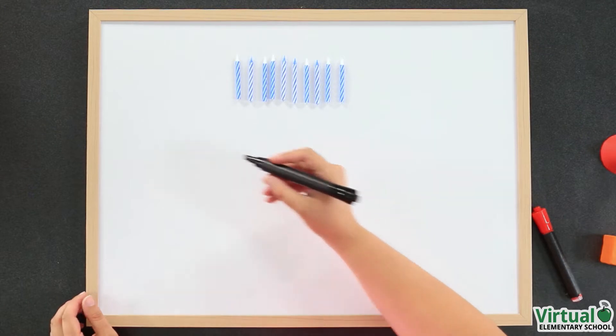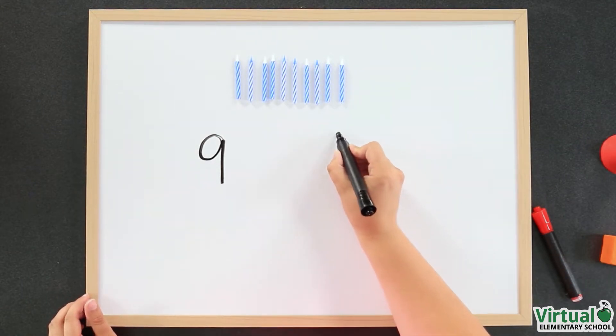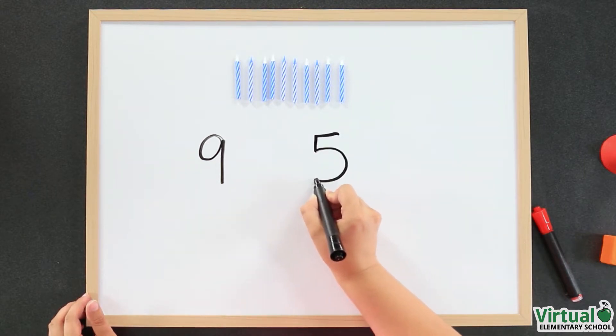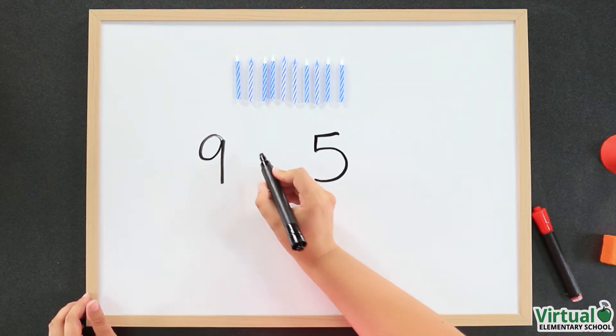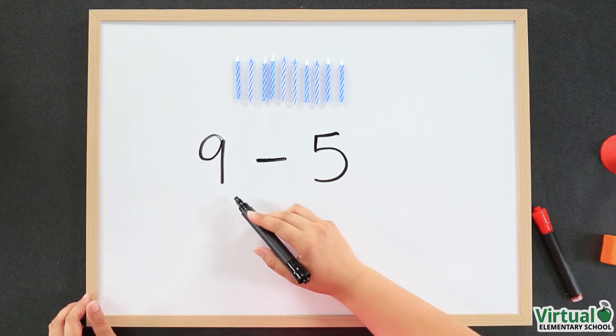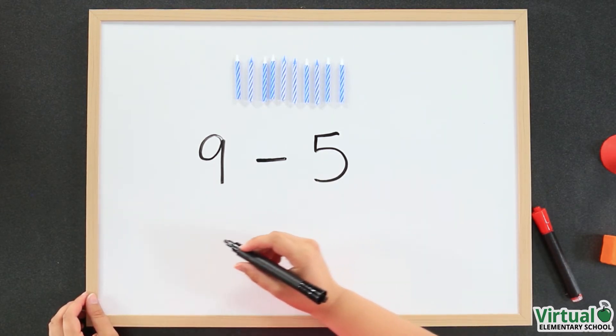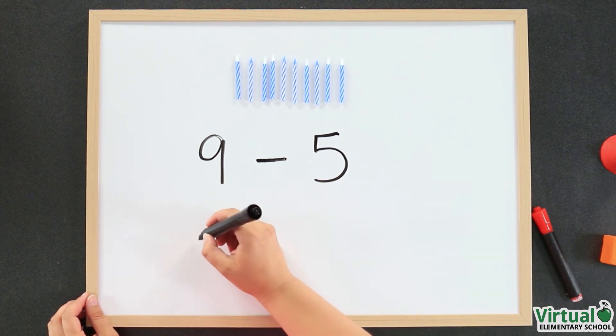candles. I'll write the number nine. We know that Gadget wants to borrow five candles. We need to add a symbol between the two numbers to show that we are subtracting. This symbol is called the minus sign. It shows that we have nine candles and we are going to take away five candles. Let's draw nine lines to show the nine candles.